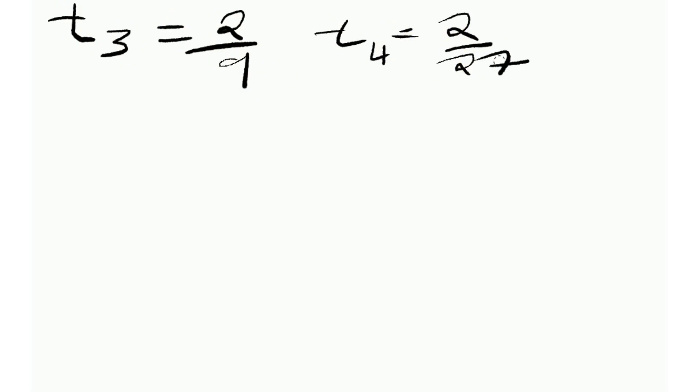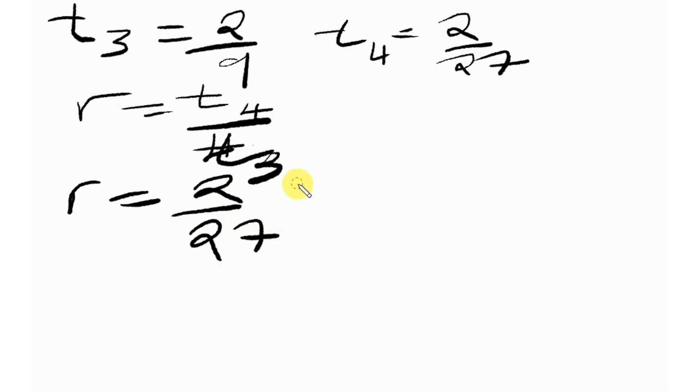The first question reads, find the first term and the common ratio. So for me to find the common ratio, I'll say R is equal to the fourth term divided by the third term. So my ratio is equal to T4, which is 2 over 27, divided by 2 over 9.